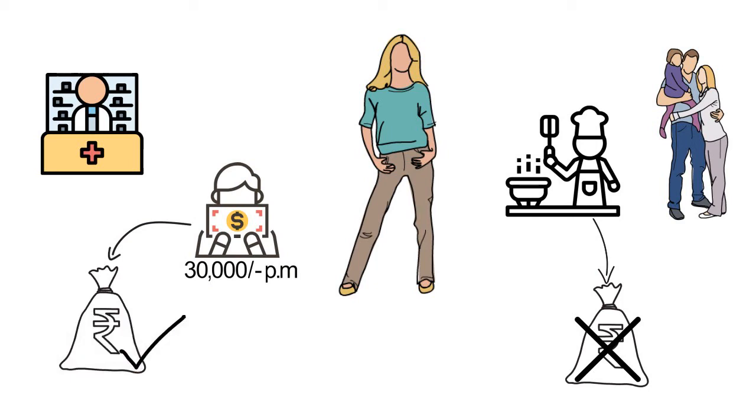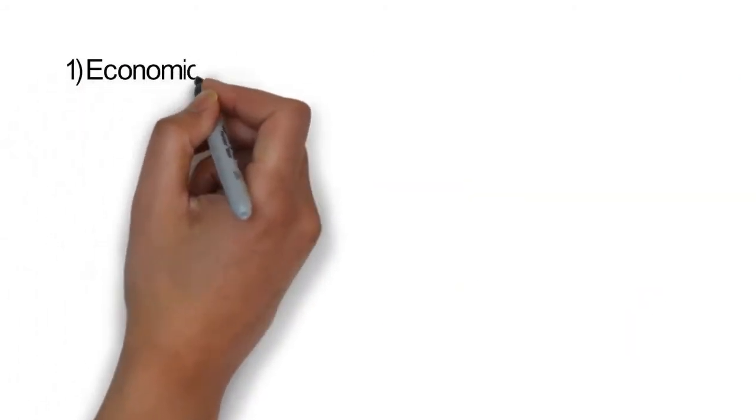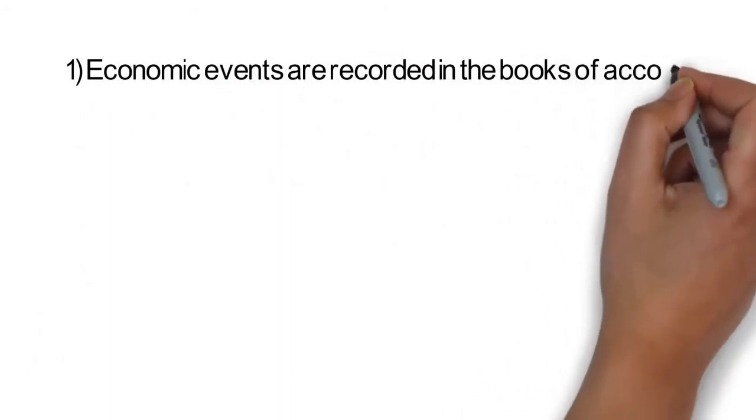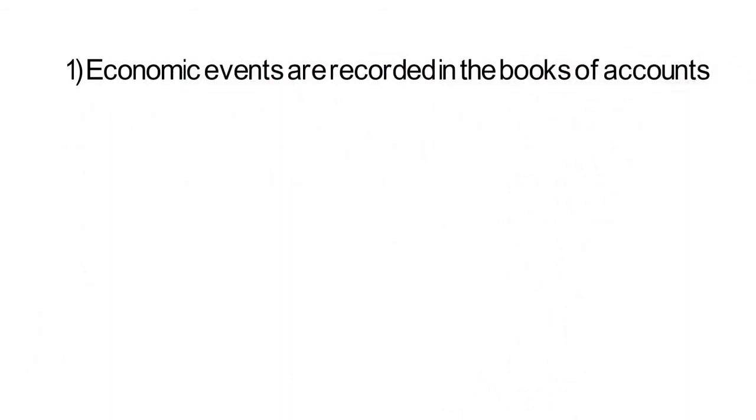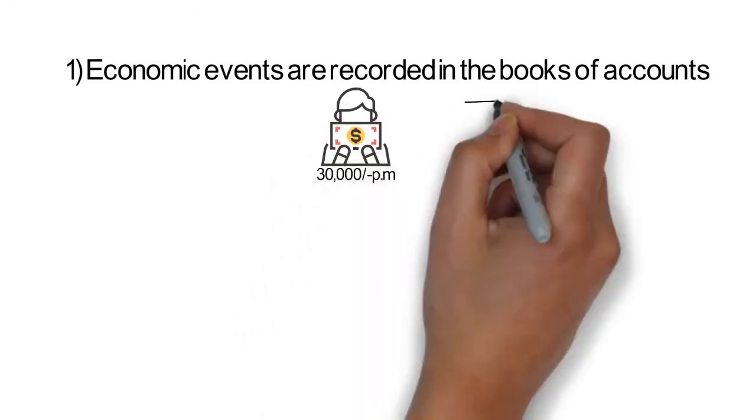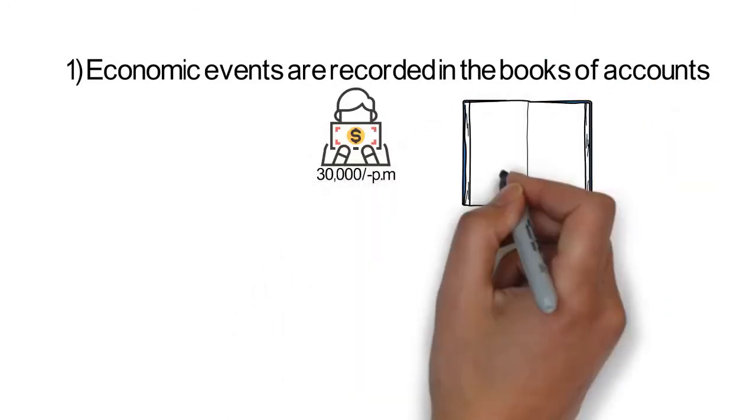So, from this example, we got two points to learn. What are those points? First, economic events are recorded in the books of accounts. Like Aisha was getting 30,000 from medicine shop, that will be recorded in books of accounts.